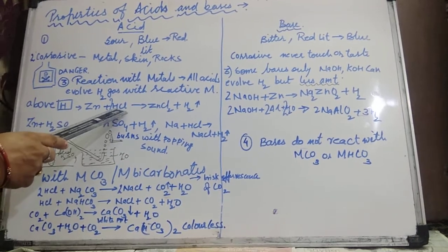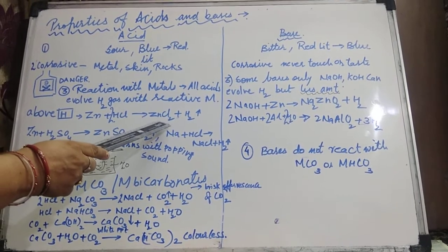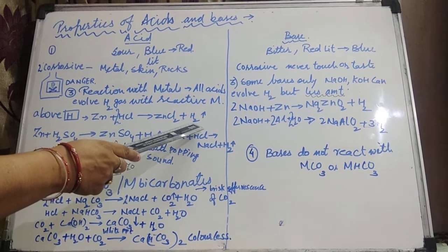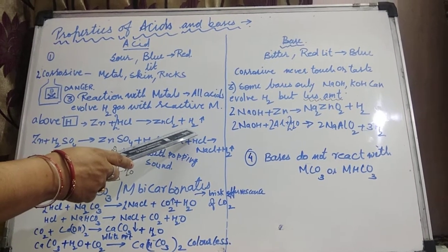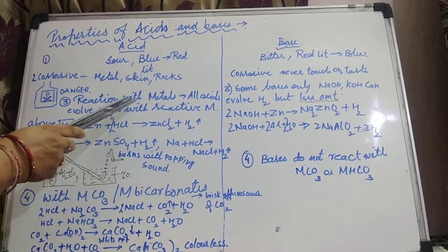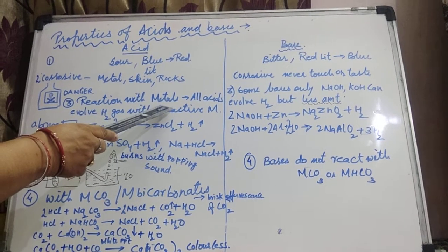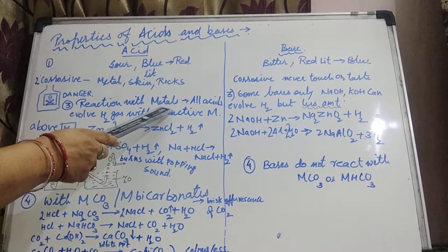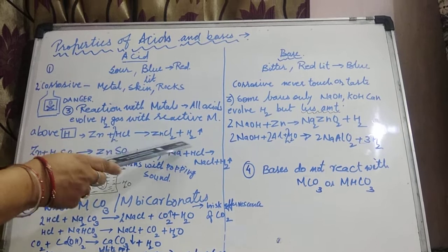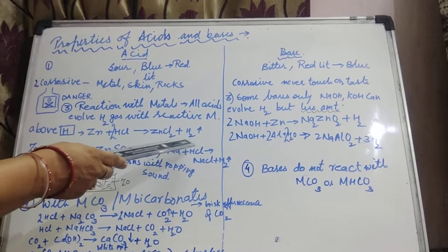Here I am taking an example: zinc plus hydrochloric acid HCl. Zinc is more reactive than hydrogen; it is placed above hydrogen in the reactivity series. Zinc plus twice of HCl gives salt and hydrogen gas evolves out. Whenever metals react with acids, they produce salt and hydrogen gas evolves out.